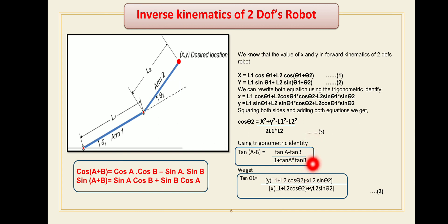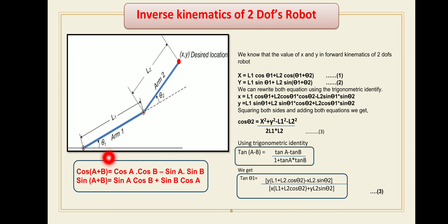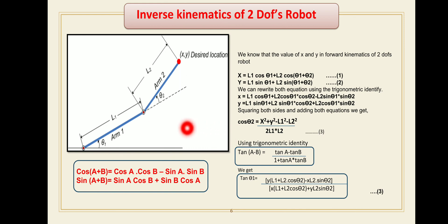By using these two equations — theta2 = cos⁻¹(answer) and theta1 = tan⁻¹(answer) — you can easily find the unknown joint angles. Theta1 is the angle between the axis of link one and the horizontal plane, and theta2 is the angle between the axis of link one and the axis of link two.